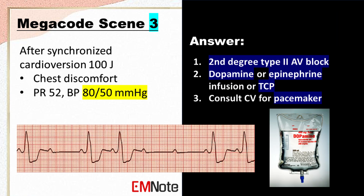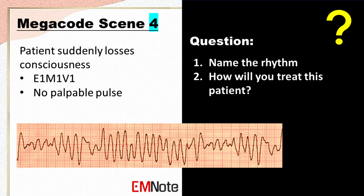The patient has symptomatic second-degree Mobitz Type 2 AV block. The patient can be treated with dopamine or epinephrine infusion, or transcutaneous pacing (TCP). A cardiologist should be consulted for evaluation of pacemaker insertion. The patient has suddenly lost consciousness and has no palpable pulse.